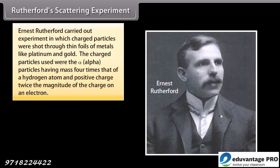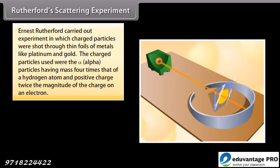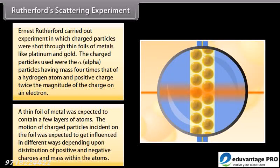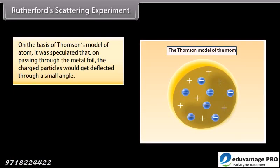Rutherford Scattering Experiment. Ernst Rutherford carried out experiment in which charged particles were shot through thin foils of metals like platinum and gold. The charged particles used were the alpha particles having mass four times that of a hydrogen atom and positive charge twice the magnitude of the charge of an electron. A thin foil of metal was expected to contain a few layers of atoms. The motion of charged particles incident on the foil was expected to get influenced in different ways depending upon distribution of positive and negative charges and mass within the atoms. On the basis of Thomson's model of atom, it was speculated that on passing through the metal foil, the charged particles would get deflected through a small angle.